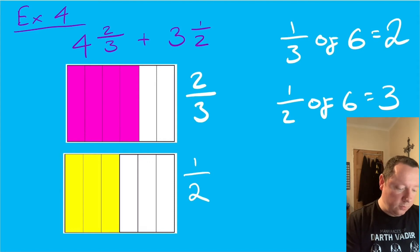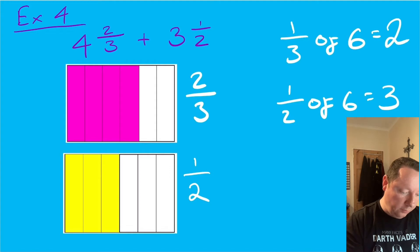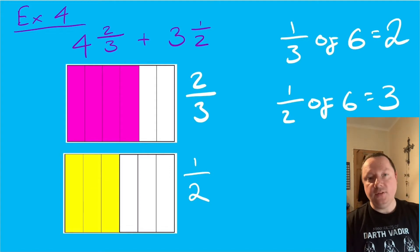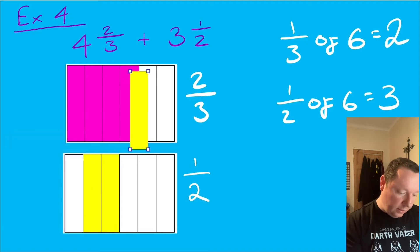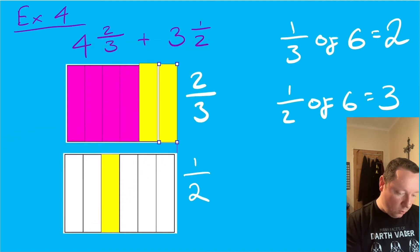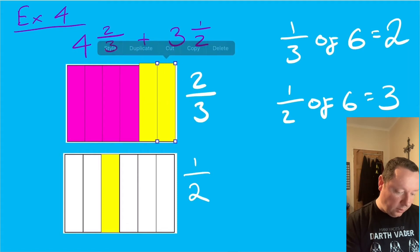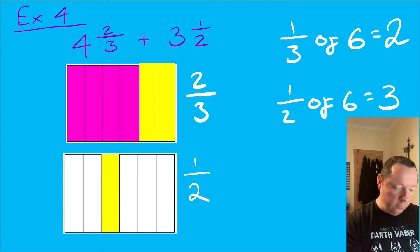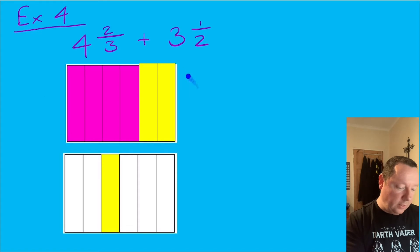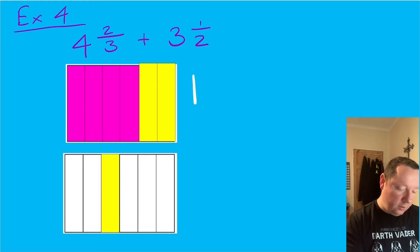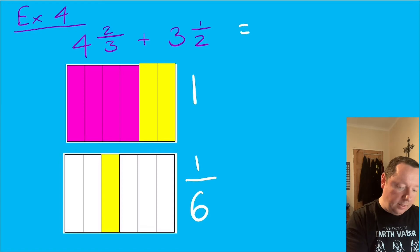So we've got four and two thirds plus three and a half. Counting all the shaded pieces: one, two, three, four, five, six, seven sixths. Seven sixths is more than one whole bar. Moving the pieces together, I can see one whole bar of six plus one extra piece — that's one whole and one sixth extra, making seven sixths equal to one and one sixth. So the final answer is seven plus one and one sixth, which is eight and one sixth.